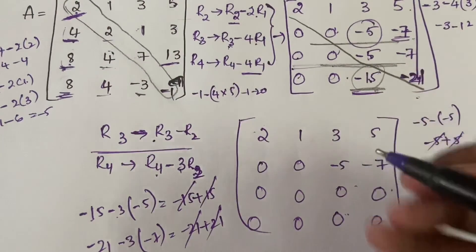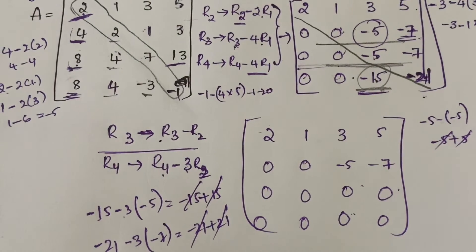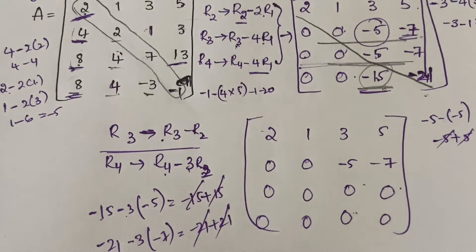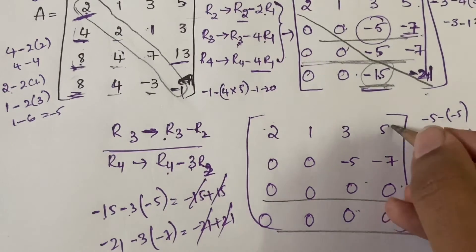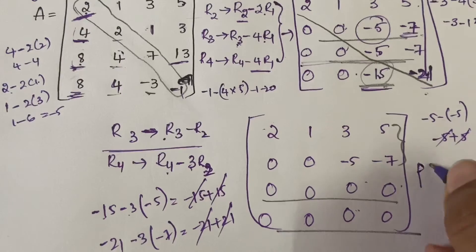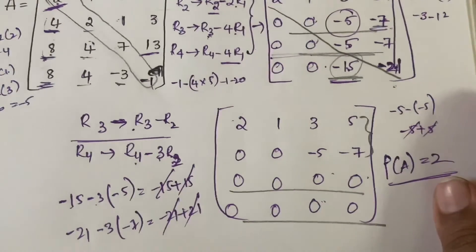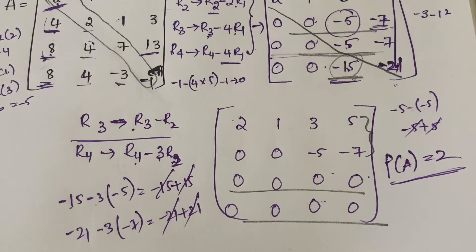We got all elements below the diagonal as 0, so we can stop — we are done. In this process, R3 also became a zero row. So how many zero rows do we have? Two zero rows — R3 and R4. That means how many non-zero rows? Only 2. So the rank is equal to 2. To summarize: in echelon form, identify the diagonal, make all elements below it 0, and if you can make any additional rows 0, do so — then count the non-zero rows for the rank.